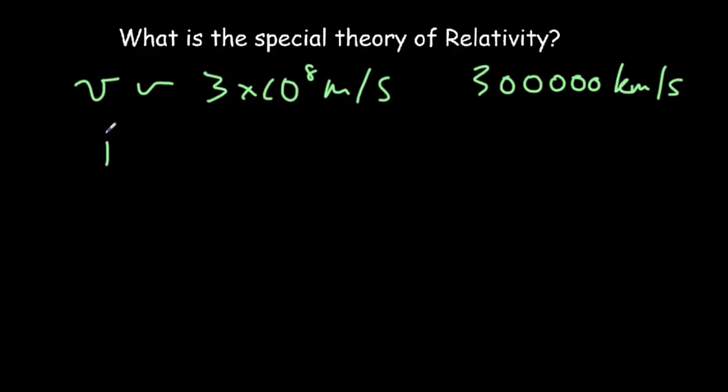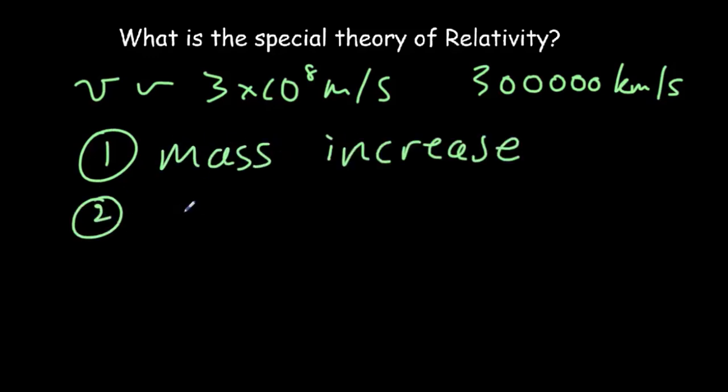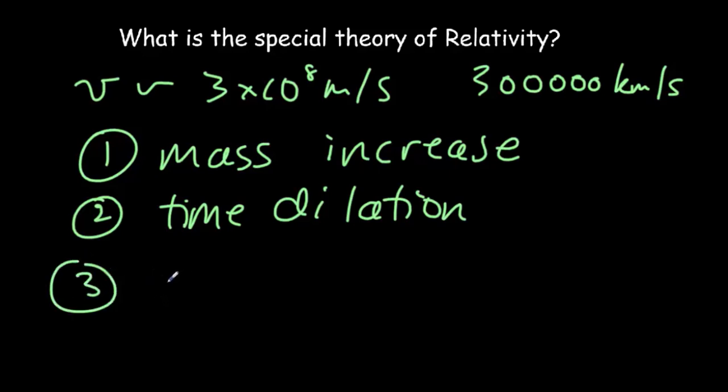And then there's three basic effects when we have relative motion. One would be called mass increase. Two called time dilation. Time will slow down. And three is length contraction. Now sometimes I'll hear students say it seems like lengths contract when there's relative motion between objects. That makes it seem like an optical illusion and it's not an optical illusion.